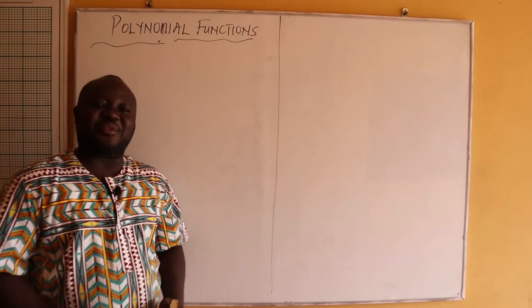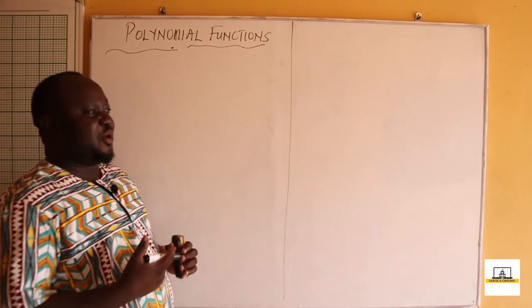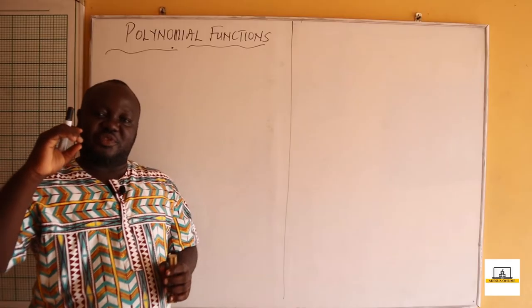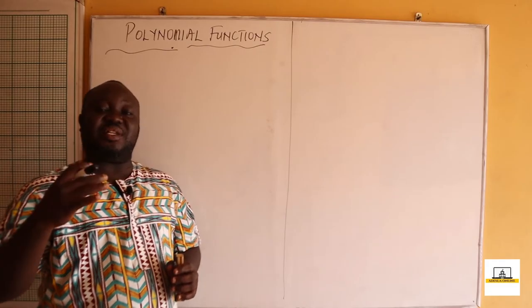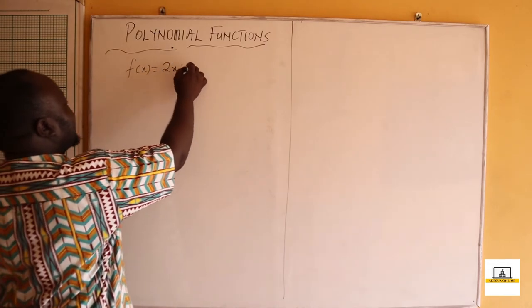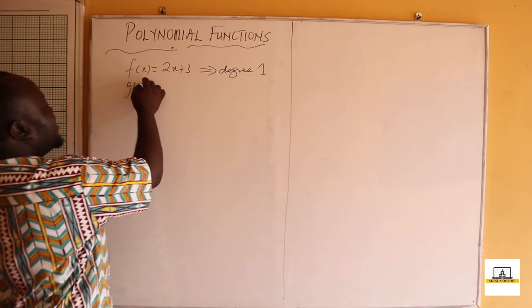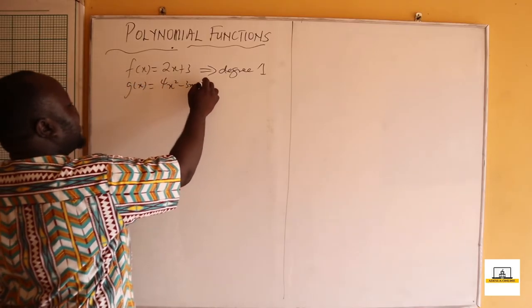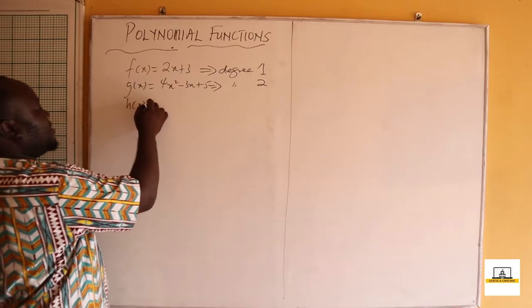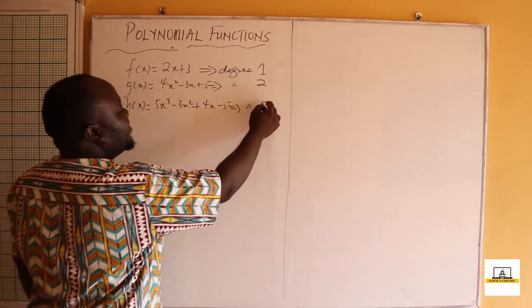Hello students, today we are going to treat polynomial functions. A polynomial is any expression or equation which has a particular number of degrees. The highest degree tells you the type of polynomial. For example, f(x) = 2x + 3 is a polynomial of degree 1; g(x) = 4x² - 3x + 5 is degree 2; and h(x) = 5x³ - 3x² + 4x - 5 is a polynomial of degree 3.